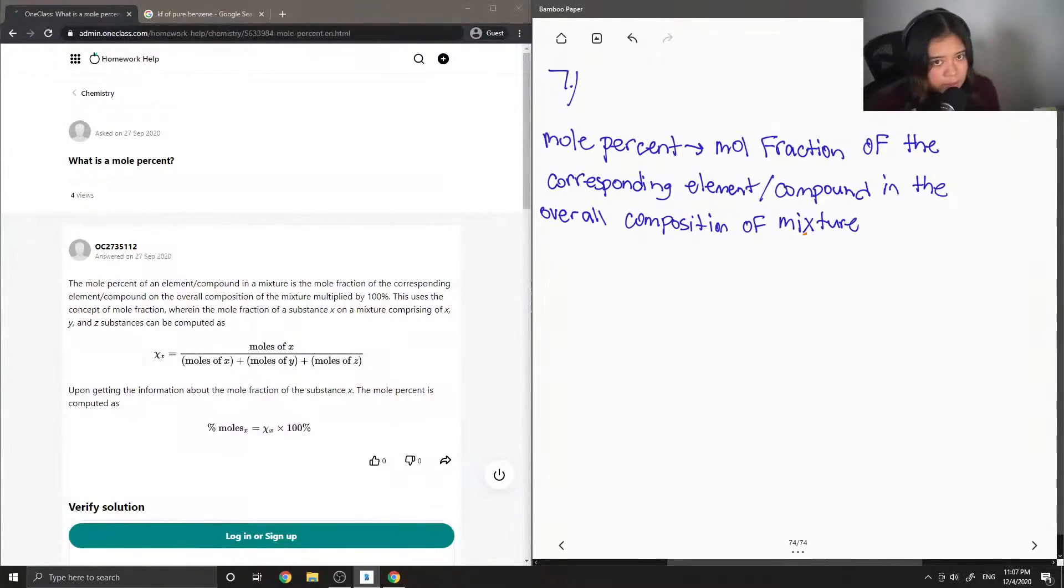Okay, so this makes more sense when we just do an example. So for example, let's say we had a mixture that contains 0.17 moles of NaCl plus 5.55 moles of H2O. And then we want to know what is the mole percent of sodium chloride.